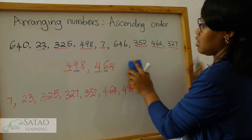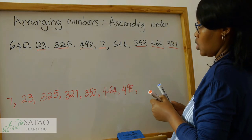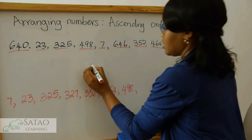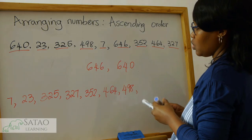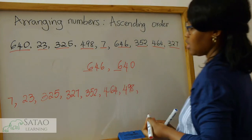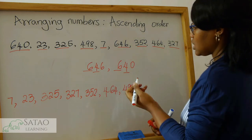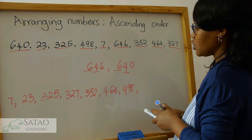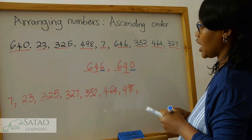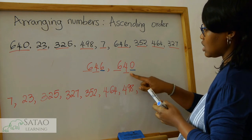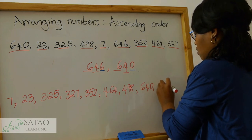We look for numbers beginning with five — there are none. We look for numbers beginning with six — there are two. So we write them down: six hundred and forty-six and six hundred and forty. We look at the first digit — the same. We look at the second digit — four — the same. So we look at the third digit. Between zero and six, which one is smaller? Zero is smaller, so six hundred and forty is the smaller number, followed by six hundred and forty-six.